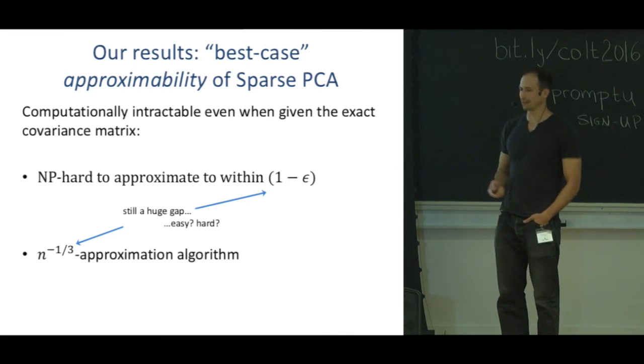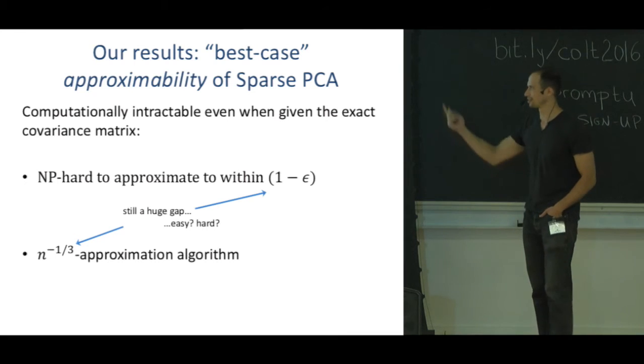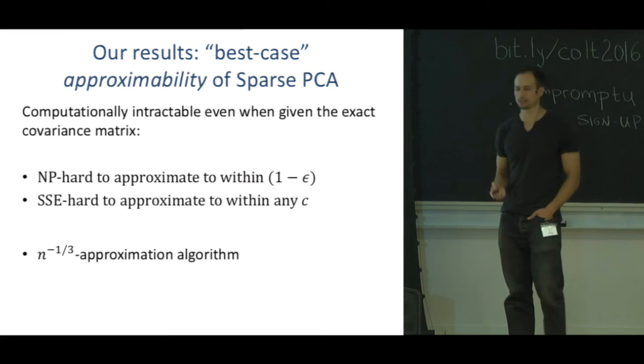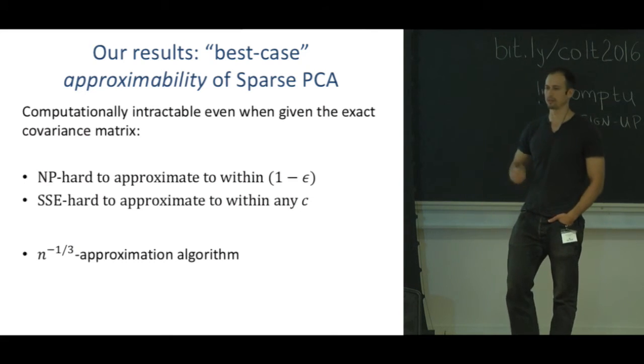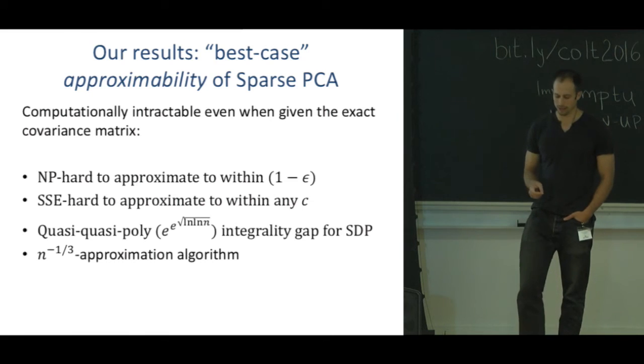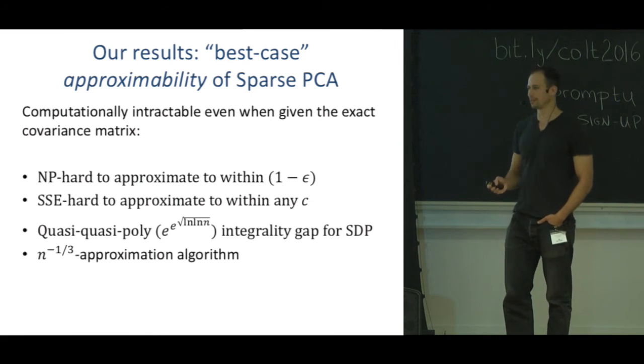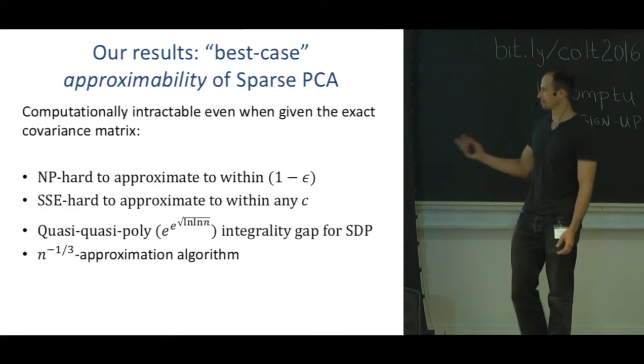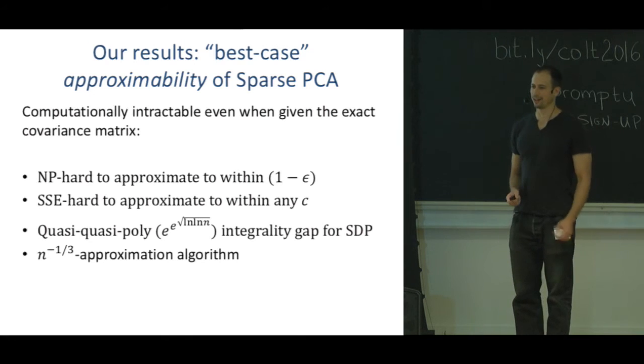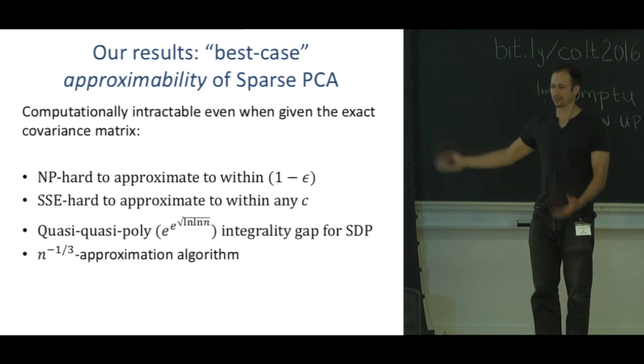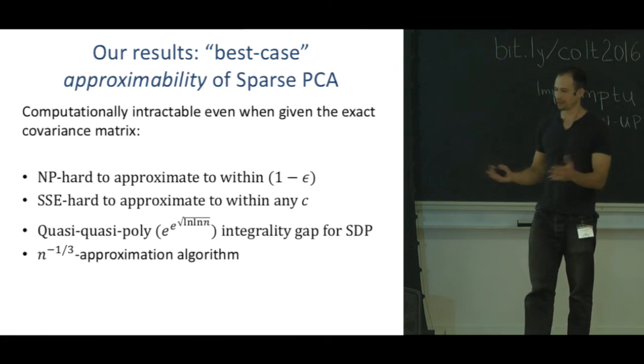It seems like it's harder than this 0.99 approximation. We get for any constant c, approximation to within c is hard assuming the smallest set expansion conjecture. The SDP that we all use to solve sparse PCA in sufficiently small instances has this quasi-polynomial integrality gap. Let me just tell you the gap is bigger than logarithmic and smaller than polynomial.